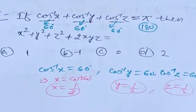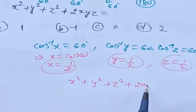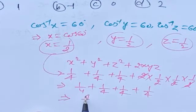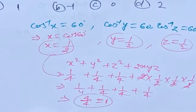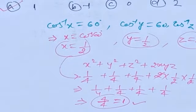We need to find x² + y² + z² + 2xyz. Substituting x = y = z = 1/2: we get (1/4) + (1/4) + (1/4) + 2·(1/2)·(1/2)·(1/2) = 3/4 + 2·(1/8) = 3/4 + 1/4 = 1. So the answer is 1, which is the first option.